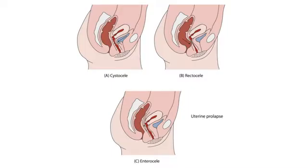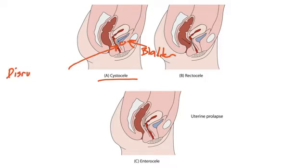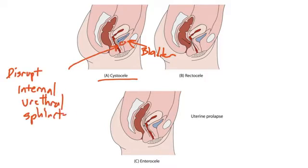Looking at our image for pelvic organ prolapse, notice that if the bladder presses into the vaginal wall, the internal urethral sphincter can be disrupted. Here we have the cystocele — the bladder is pushing posteriorly into the wall of the vagina, disrupting the internal urethral sphincter. By disruption, I mean it simply won't close properly, so when pressure increases in the cavity, the sphincter will open, providing no resistance.